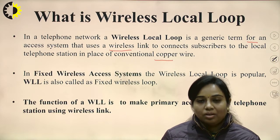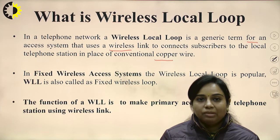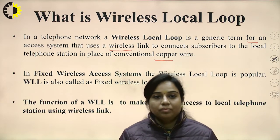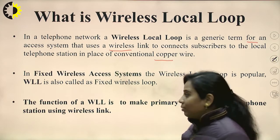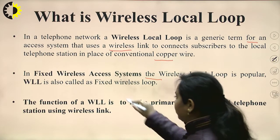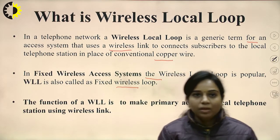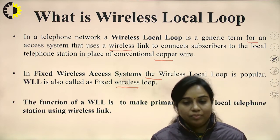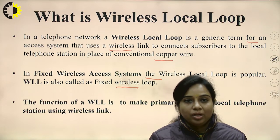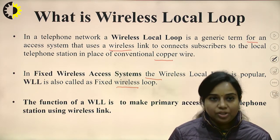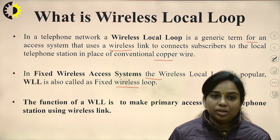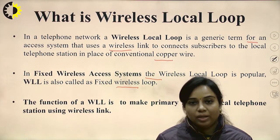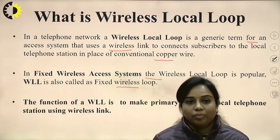Since all things are going wireless, when telephones are connected for the purpose of voice signal transmission using a wireless local loop, it is known as Wireless Local Loop. In a fixed wireless access system, WLL is called a fixed wireless loop. If five different phones are connected in this loop, no additional system can be added — so it is fixed in nature.